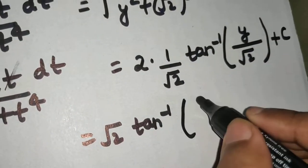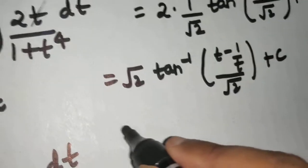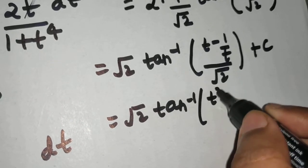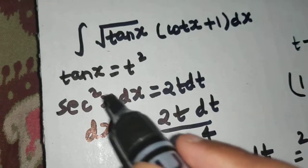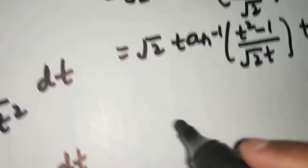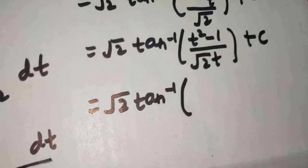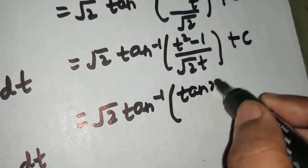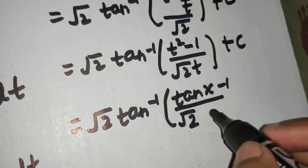Plus C always. So 2/√2 = √2, giving √2 · tan⁻¹(y/√2). Now back-substitute: y = t − 1/t, which is (t² − 1)/t. So we get tan⁻¹((t² − 1) / (√2 · t)). Now t is also our substitution variable — t = √(tan x), since tan x = t².